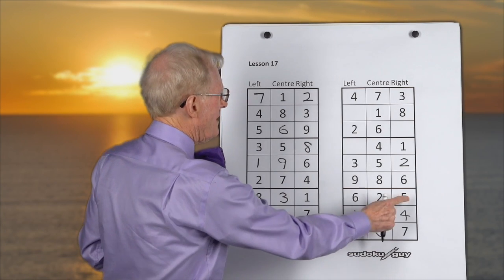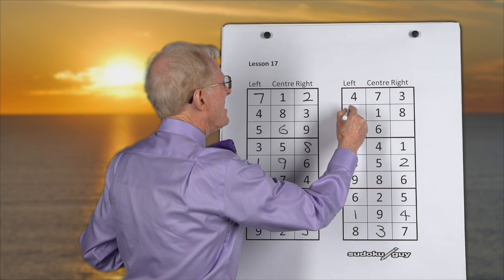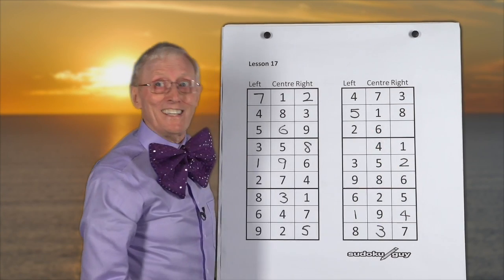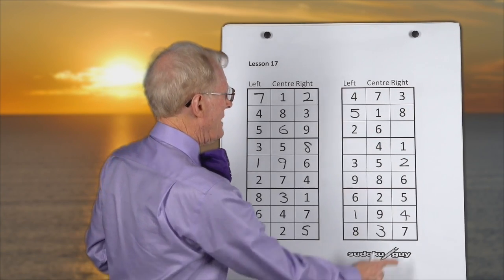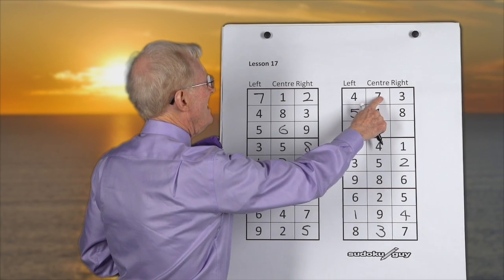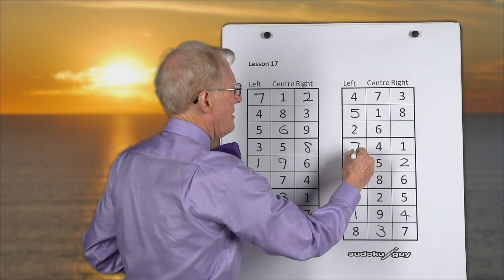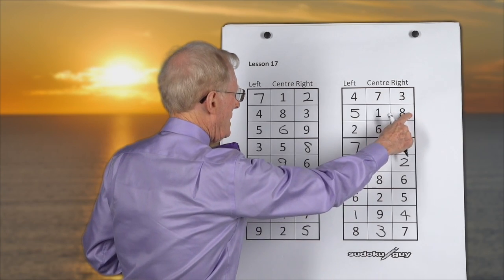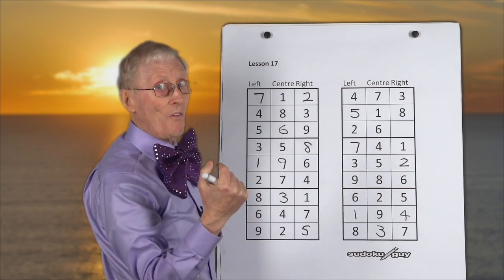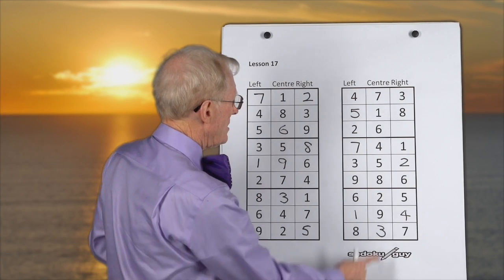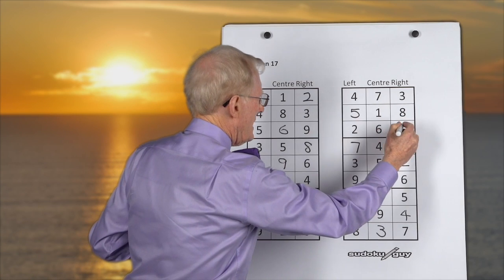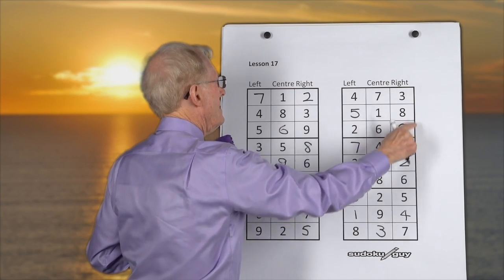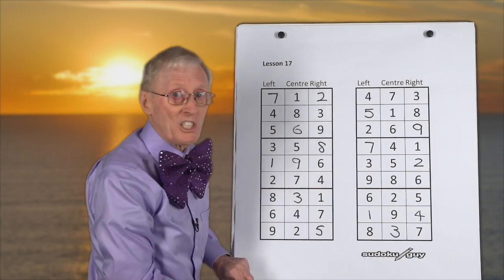Five: we have a right and a centre, so it has to be on the left. Sixes: we have a left and a right, so it has to be in the centre — and it is. Sevens: we have a right and a centre, so the block that doesn't have a seven must have it there — the only place it can go in that block. Eight: we have an eight on the right, an eight in the centre, and an eight on the left — they're all there. So all we have now is nine. We can go centre, left, right — this has to be the nine, the only one left in that column and the only one left in that block. So that's an introduction to the LCR.